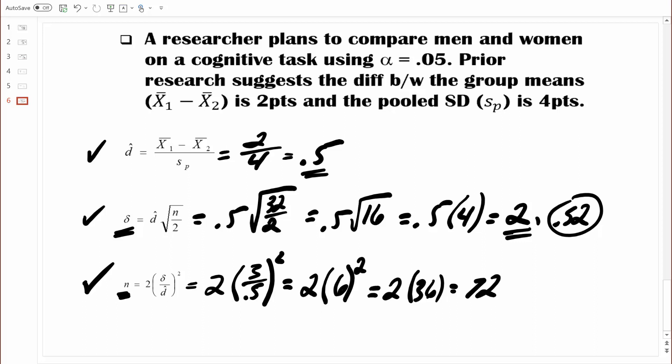So how many people do we need overall? Overall, we're going to need 72 times 2. And 72 times 2 equals 144. So in order to run this study with 85% power, based on using an alpha of 0.05, a two-tailed test, and having an effect size of 0.5, we would need 144 people overall, 72 men, and 72 women.